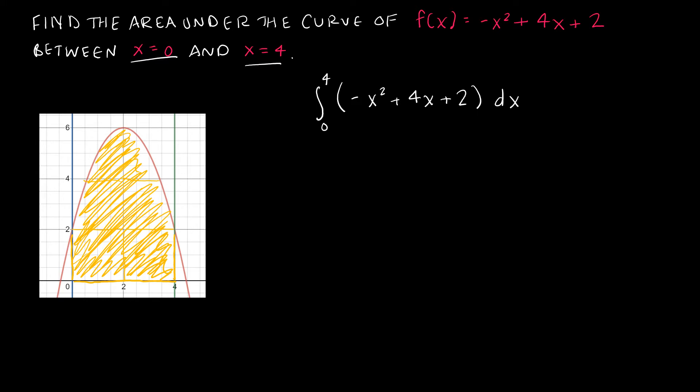So obviously this takes us back to Calc 1, doing a definite integral. So I'm going to integrate: if I take -x² I get -x³/3. If I take 4x that's 4 times x²/2, which is just 2x². And then if I take 2 it's going to become 2x. Remember I'm integrating from 0 to 4, and when we are integrating a definite integral, remember we don't need the plus C.